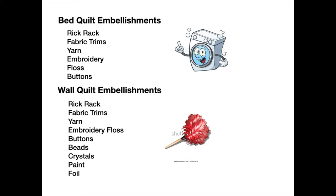If you're making a wall quilt you can add even more because it probably will just be something that is dusted. You can add rick-rack, trims, yarn, floss, buttons, and beads, crystals, paint, and foil.